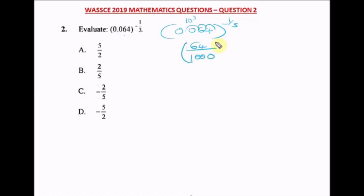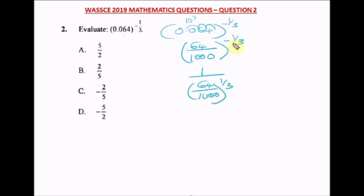To remove the negative power, we invert: one divided by (64/1000) raised to the power one over three. Remember the law of indices — when you have a negative power you invert. We can now express 64 as 4 raised to power 3, and 1000 as 10 raised to power 3. So we have (4 raised to power 3) divided by (10 raised to power 3), all raised to one over three.